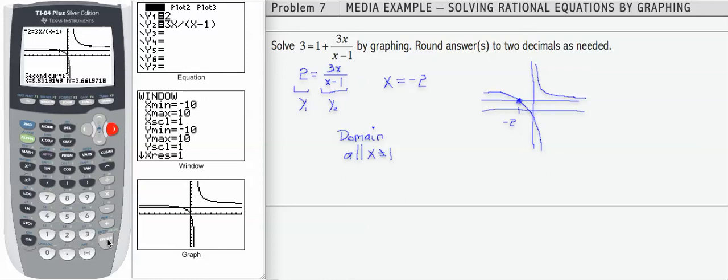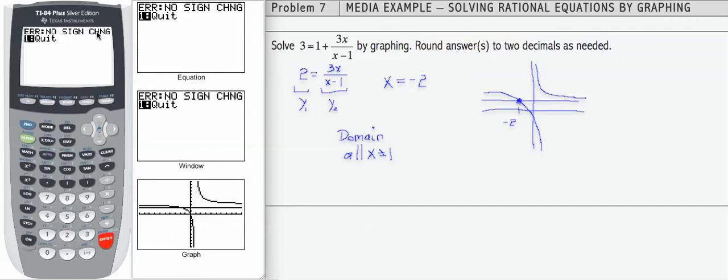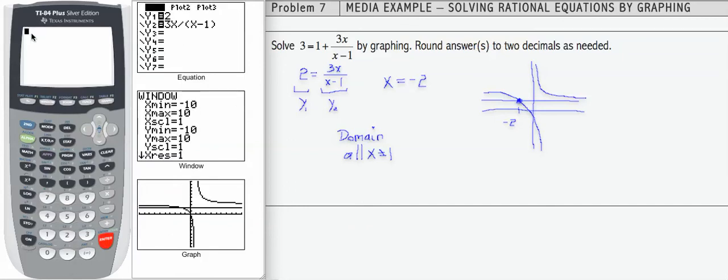So if I try to find the intersection here, it should give me an error. It gave me a no sign change error. So what I would have to do is hit enter. I would have to go back through the 2nd calc process, number 5.